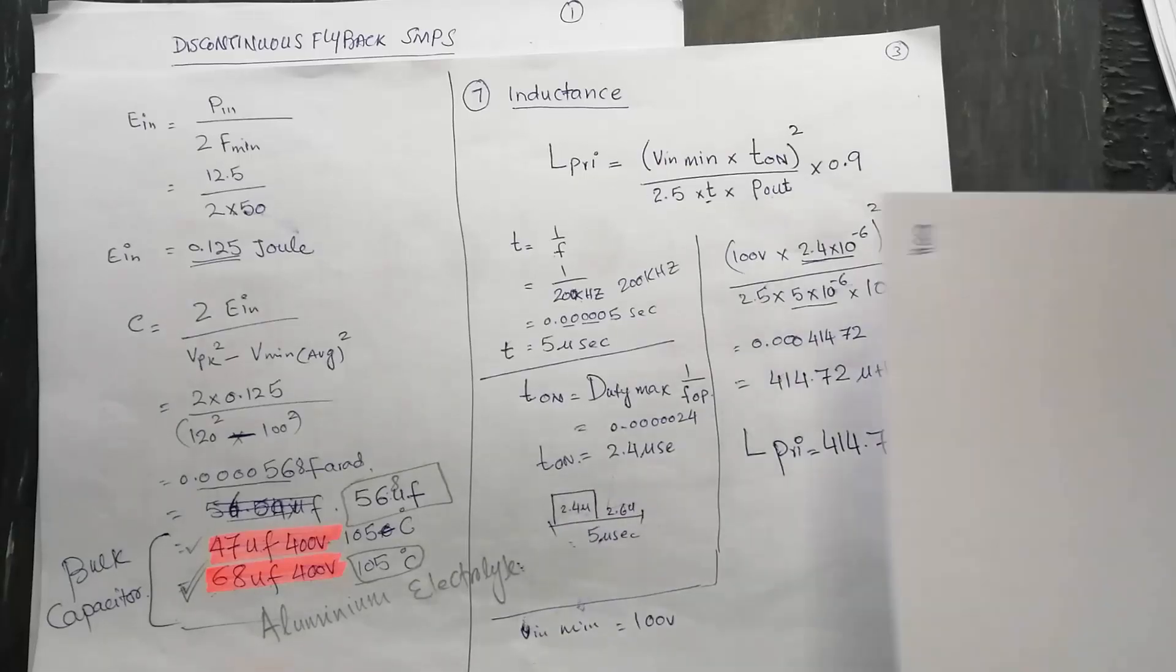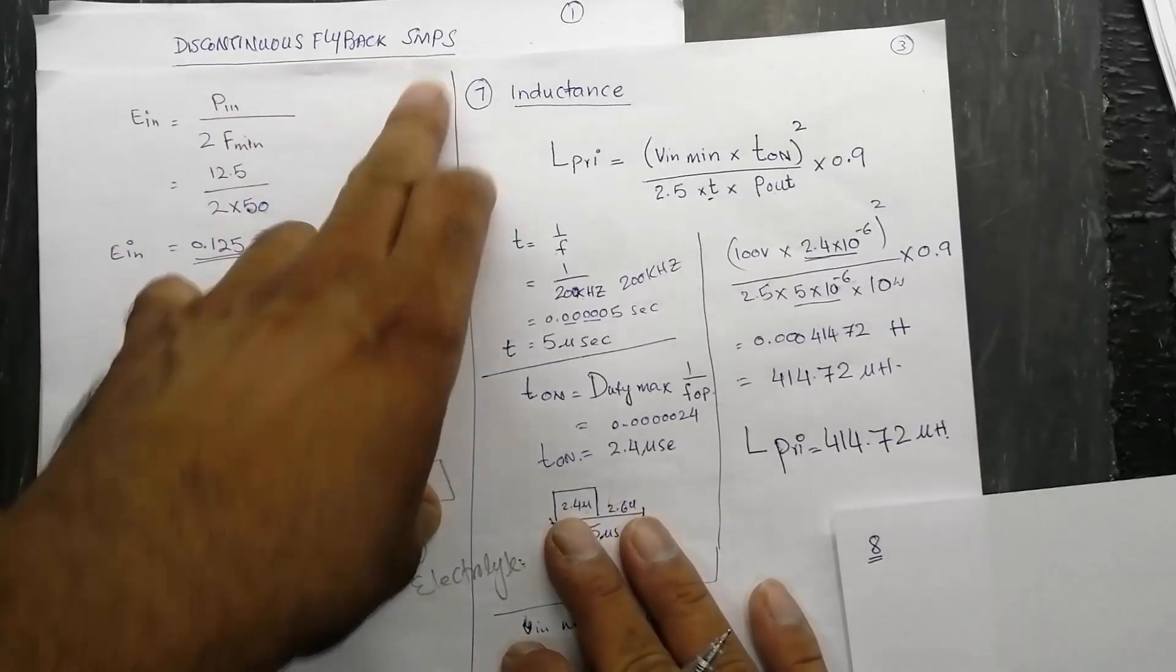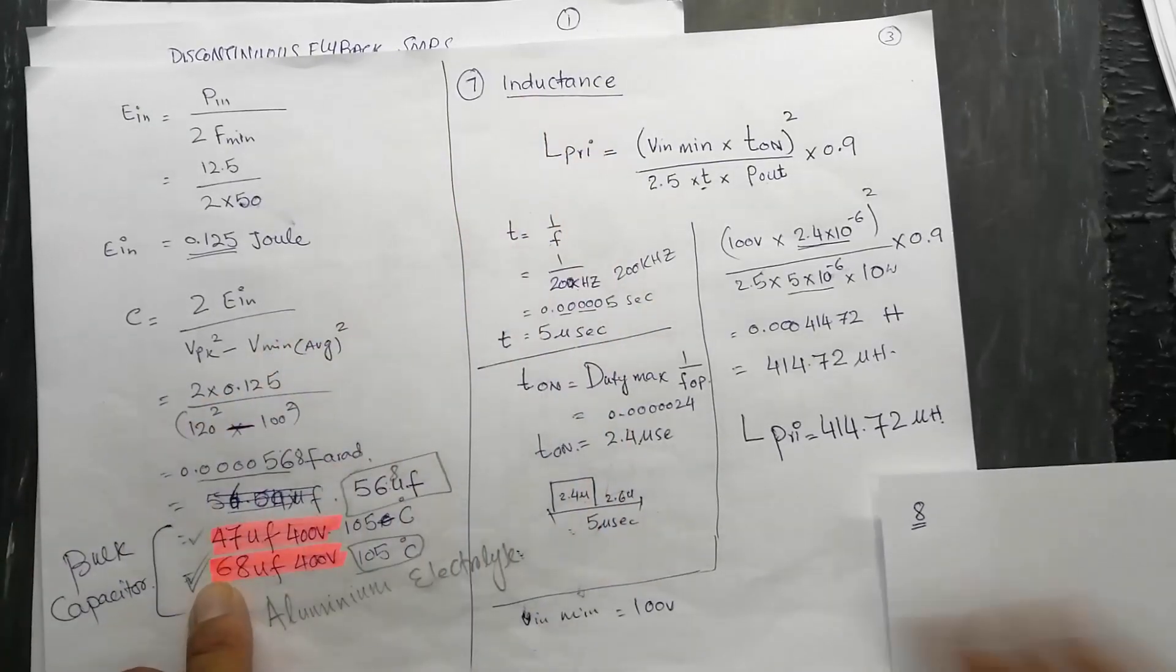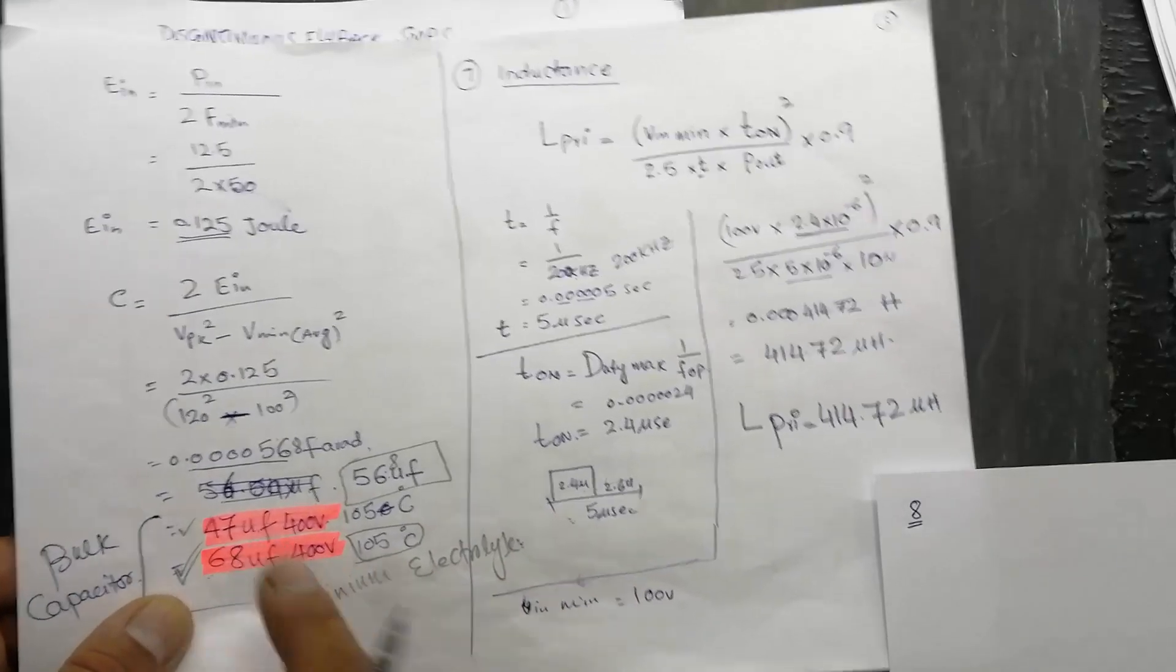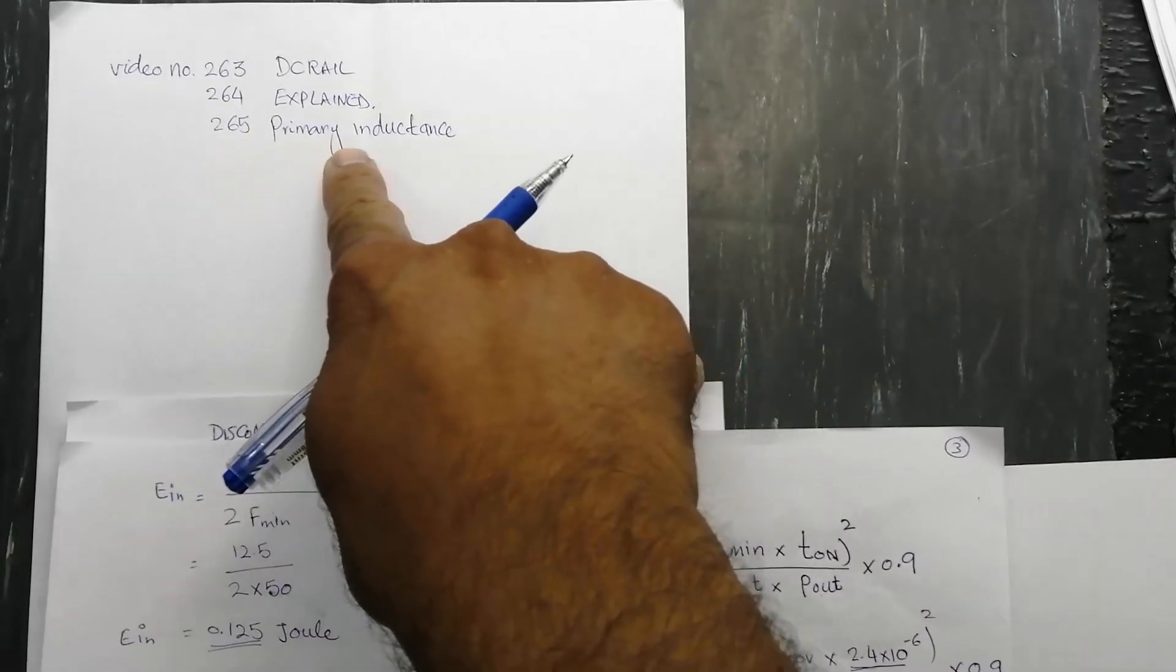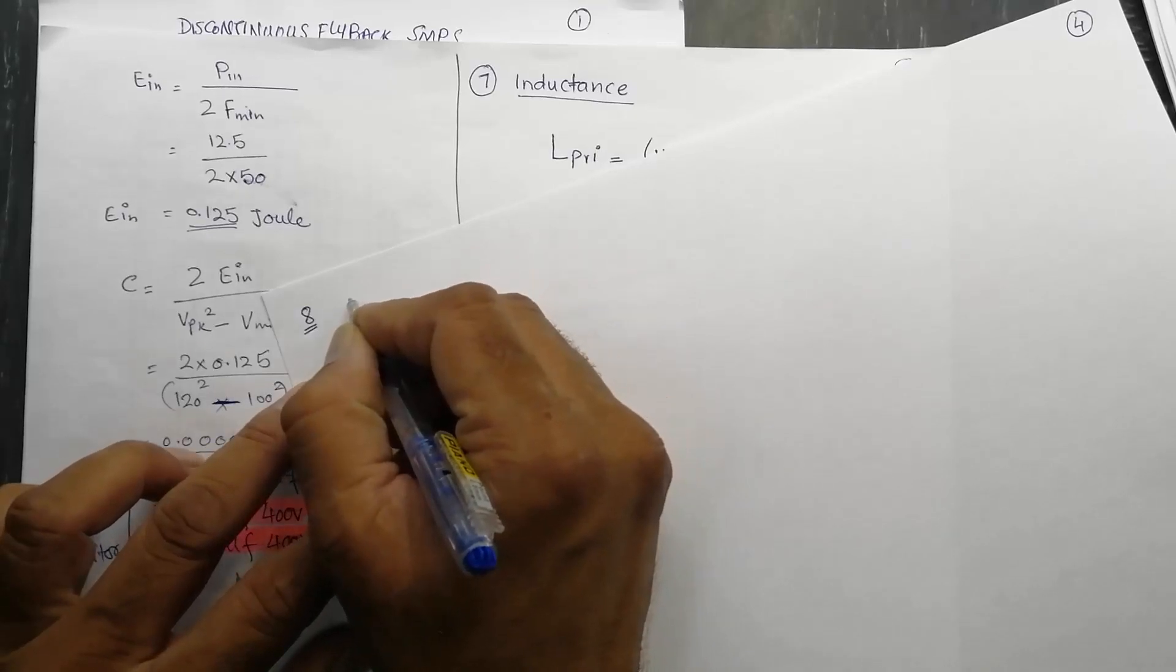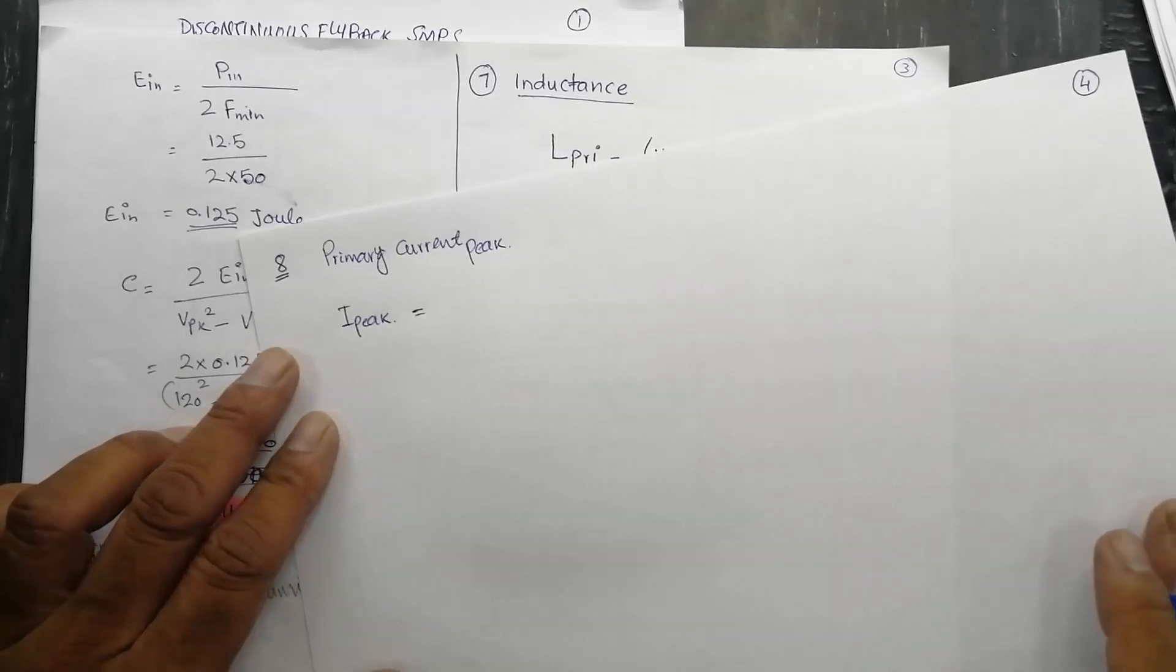Assalamualaikum warahmatullahi wabarakatuhu, welcome to Civil Electronics friends. In our discontinuous flyback SMPS design using UC3843, last time we calculated inductance, and before that we calculated DC rail and the capacitance value in video number 265. It was primary inductance, and today we will calculate peak primary current I_peak.